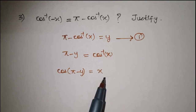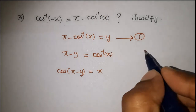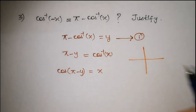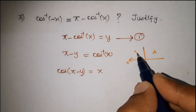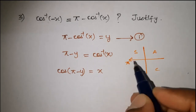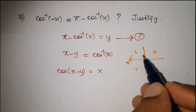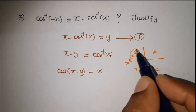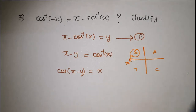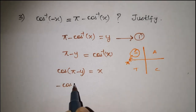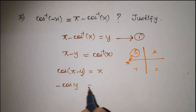Using the identity cos(pi minus theta): pi minus means we are in the second quadrant. In the second quadrant, sin is positive and cos is negative — A, S, T, C. So cos is automatically negative. Therefore, cos(pi minus y) is equal to minus cos y, giving minus cos y equal to x.